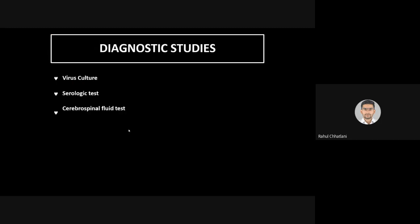Diagnostics: first and most important is virus culture — directly extracting and culturing the virus to identify which classification is present. Second is serological testing. Third is cerebrospinal fluid (CSF) testing — because the virus primarily affects the spinal cord, there will be increased protein levels in the CSF.